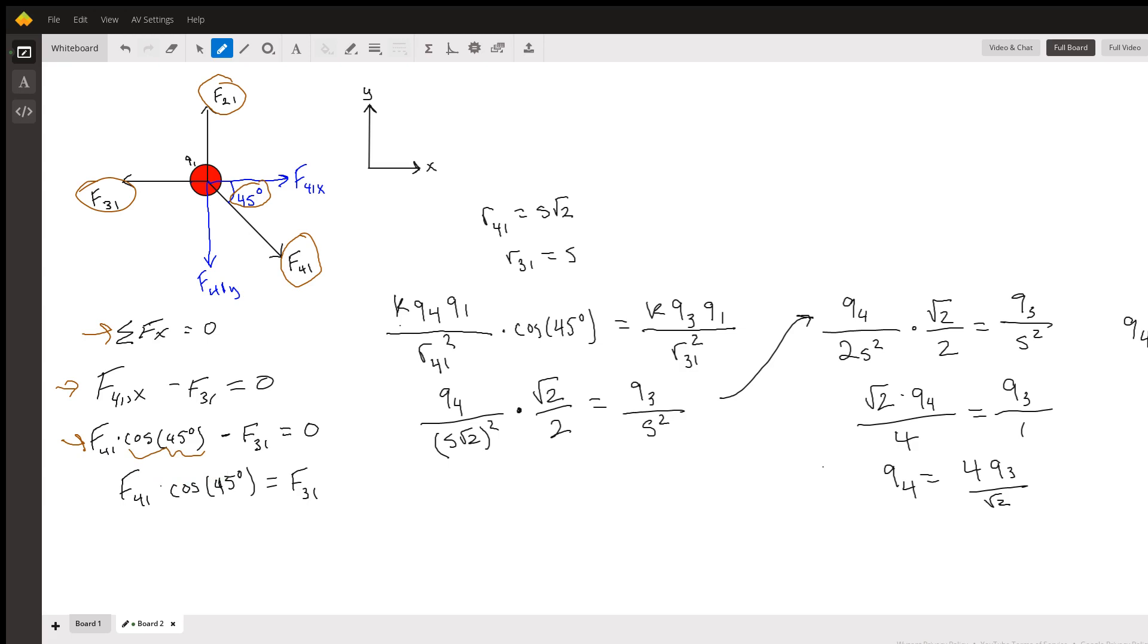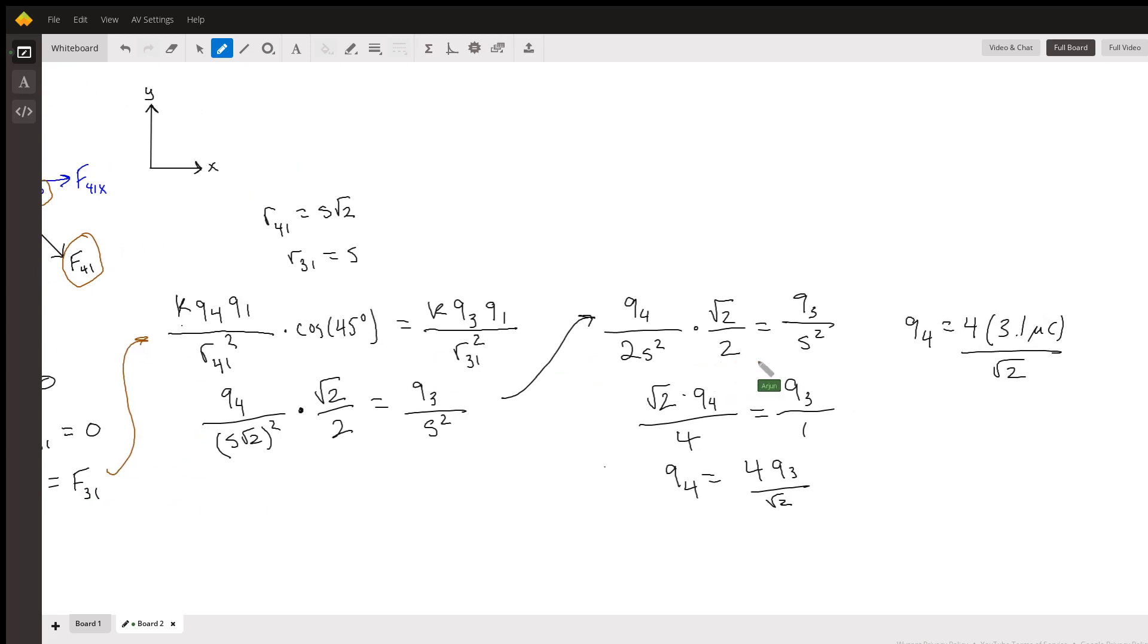We'll set F(four-on-one) times cosine 45 equal to F(three-on-one). Now we'll start to plug in our equations: k*q4*q1/r(4,1)^2 times cosine 45 degrees, where r(4,1) is the distance between charges four and one.